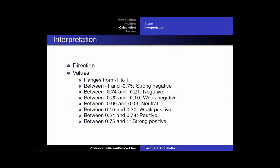Remember that the correlation coefficient ranges from negative 1 to 1, and it tells us that there is a positive, negative, or neutral relationship between two variables. Unfortunately, there is no consistent way to interpret the results of a correlation analysis — the interpretation can sometimes be subjective. Here is a general way to interpret results for this class: if the coefficient is between negative 1 and negative 0.75, there is a strong negative relationship. If it is between negative 0.74 and negative 0.21, there is a negative relationship — as one variable increases, the other often decreases.